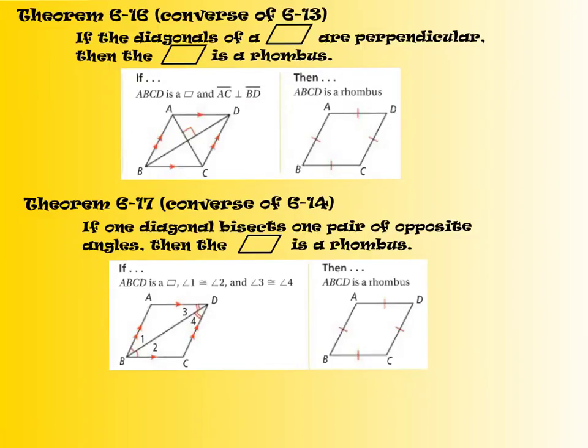Here are the first two theorems for this section. Our first theorem is theorem 6-16, which is the converse of 6-13. This is the opposite of what we learned yesterday. If the diagonals of a parallelogram are perpendicular, then the parallelogram is a rhombus. Yesterday we learned if it's a rhombus, then we know that our diagonals must be perpendicular.